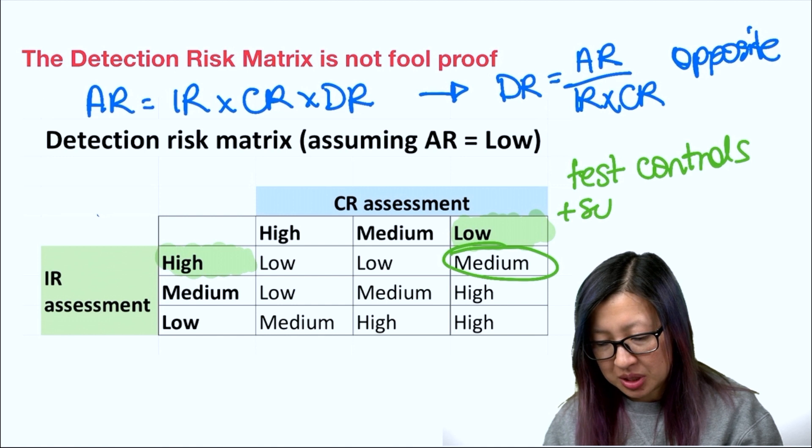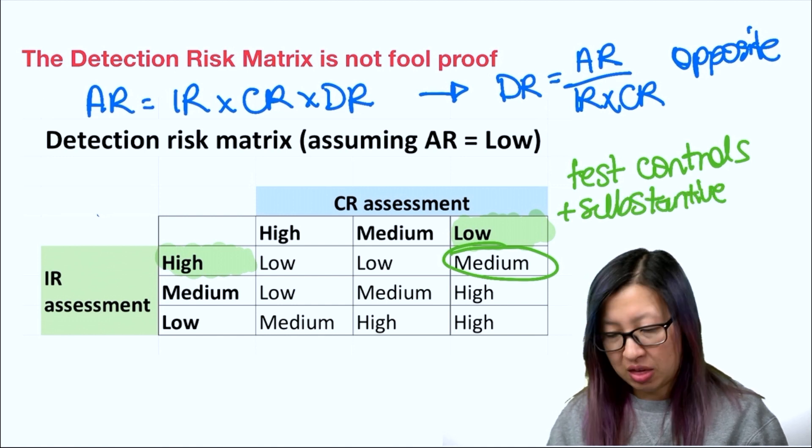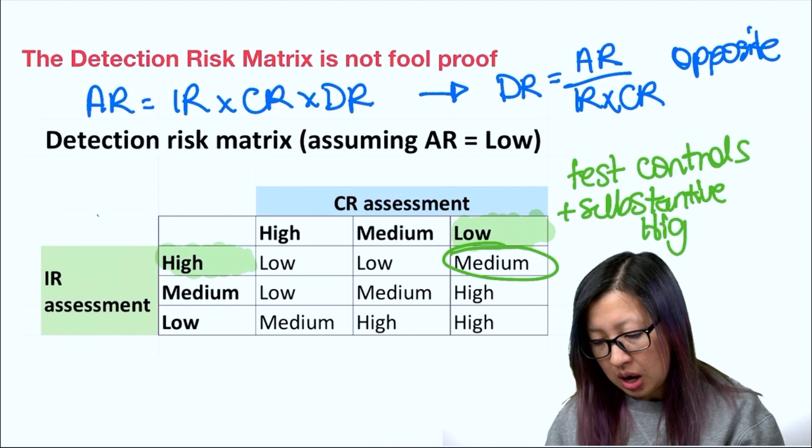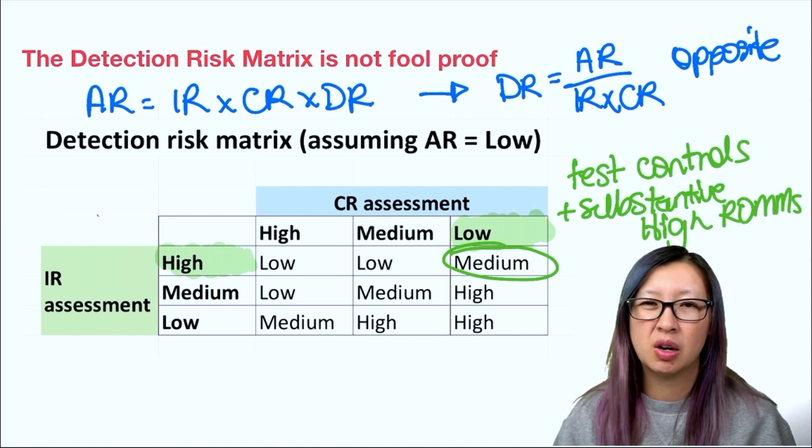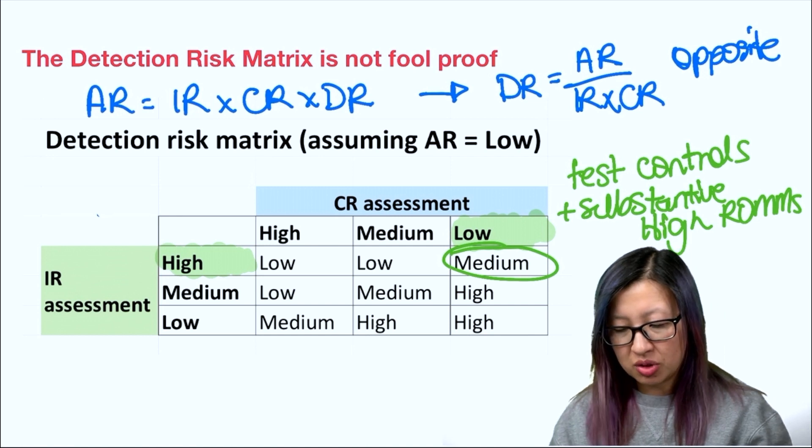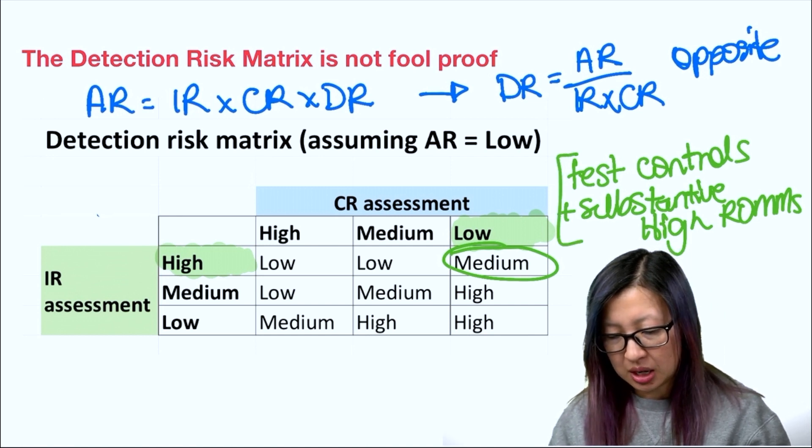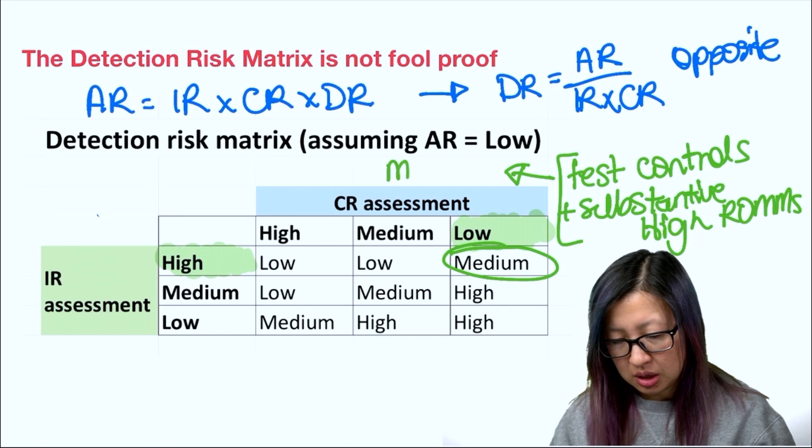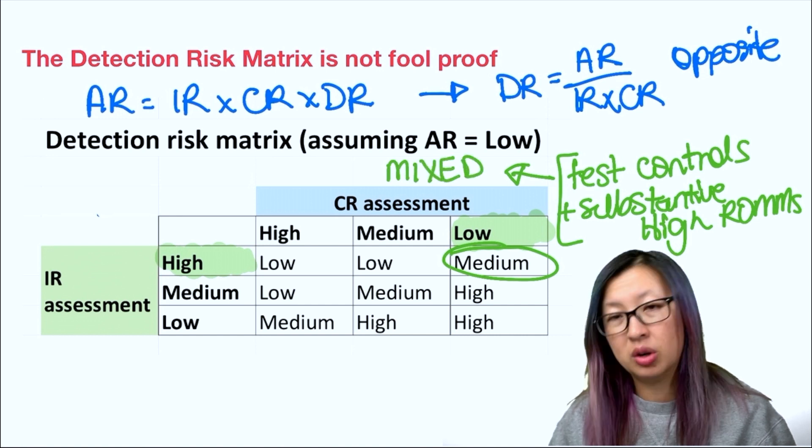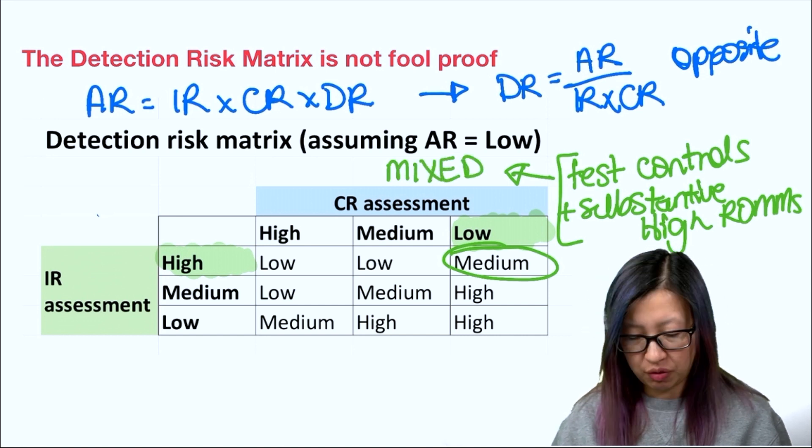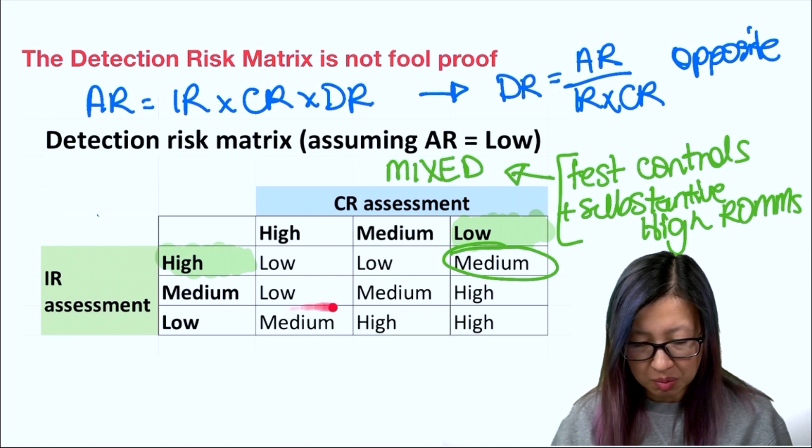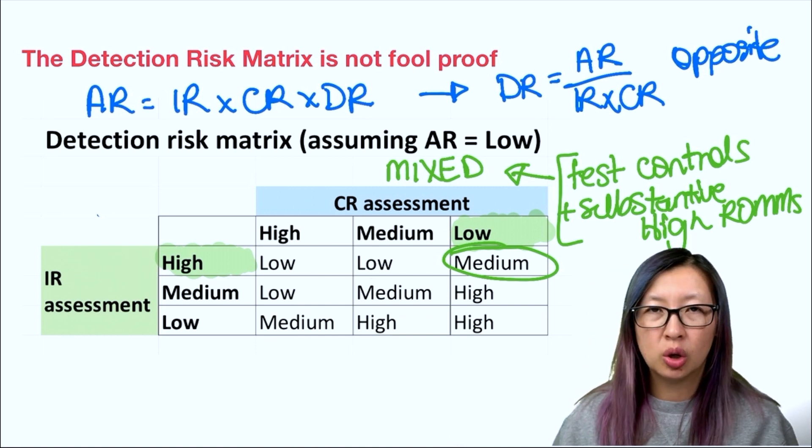And then I'm going to do substantive testing where there are high risks of material misstatements—those specific areas that are very high. So this approach that we see right here really is a mixed approach to the audit. And typically the idea is that if you're in this medium category that you would go for this mixed approach. So this makes total sense.